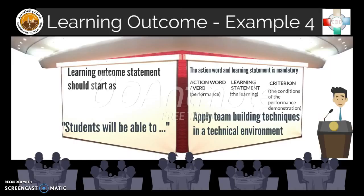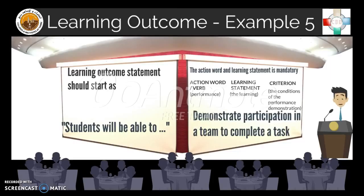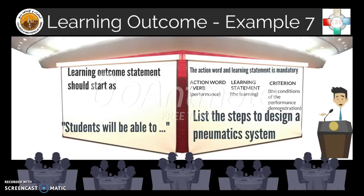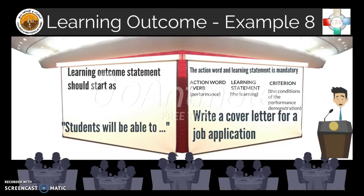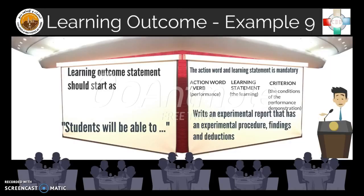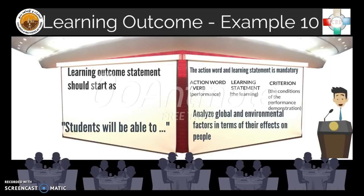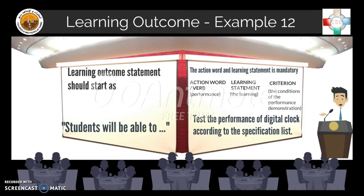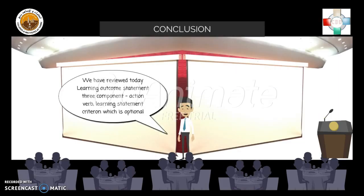Additional examples of learning outcome statements: Students will be able to apply team building techniques in a technical environment. Students will be able to demonstrate participation in a team to complete a task. Students will be able to produce documents using word processing software. Students will be able to list the steps to design a pneumatic system. Students will be able to write a cover letter for a job application. Students will be able to write an experimental report that includes an experimental procedure, findings, and deductions. Students will be able to analyze global and environmental factors in terms of their effects on people. Students will be able to explain the concepts of cloud computing. Students will be able to test the performance of a digital clock according to the specification list.